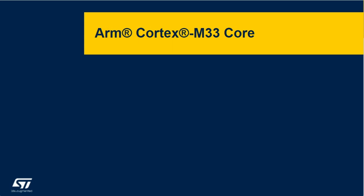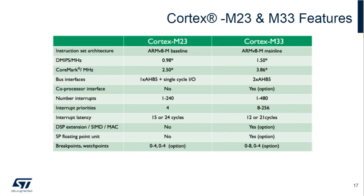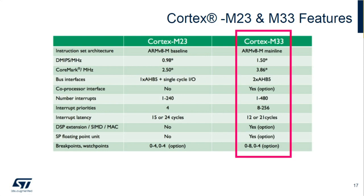ST has always been a large user of ARM cores, predating the Cortex-M. Starting in 2006 we released our first Cortex-M3 core, the F1 family. Since then we've used the M0, M0 Plus, M3, M4, and M7 cores. In January of 2020 we released the STM32L5 — our first Cortex-M33 core. In the ARM Cortex Trust Zone series there's the M23 and M33 cores; ST is only using the M33 core. It's a higher-performing core with more interrupts, the DSP option, the floating point option, and more breakpoints.